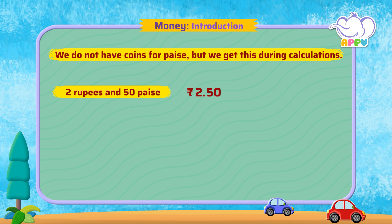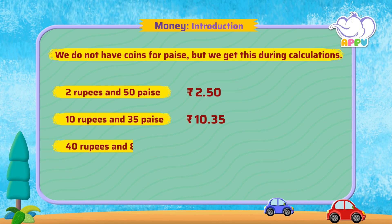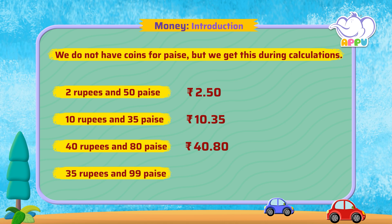10 rupees and 35 paise is written as 10.35. 40 rupees and 80 paise is written as 40.80. And 35 rupees and 99 paise is written as 35.99. You are really learning a lot!